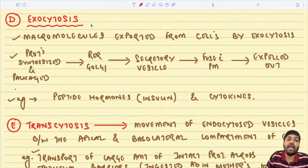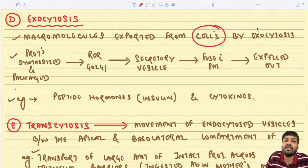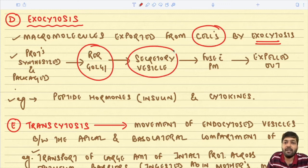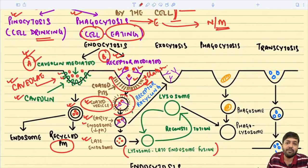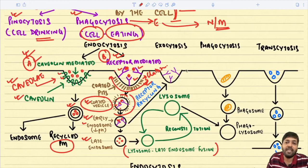Exocytosis is the process by which macromolecules are exported from cells. Proteins synthesized and packaged in the rough ER and Golgi apparatus form secretory vesicles that fuse with the plasma membrane and are expelled out. Examples of molecules exported by exocytosis include peptide hormones like insulin and cytokines.